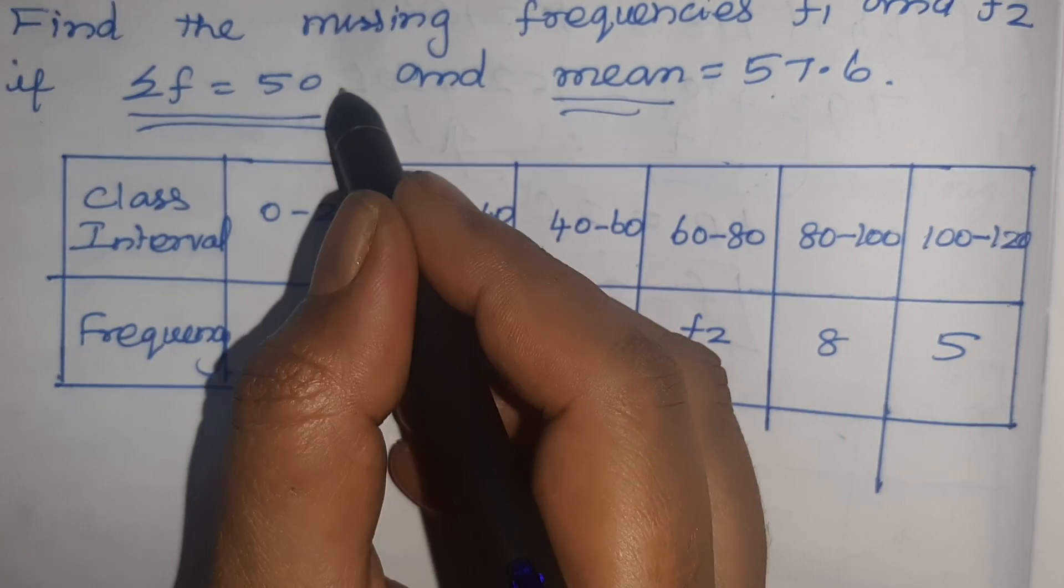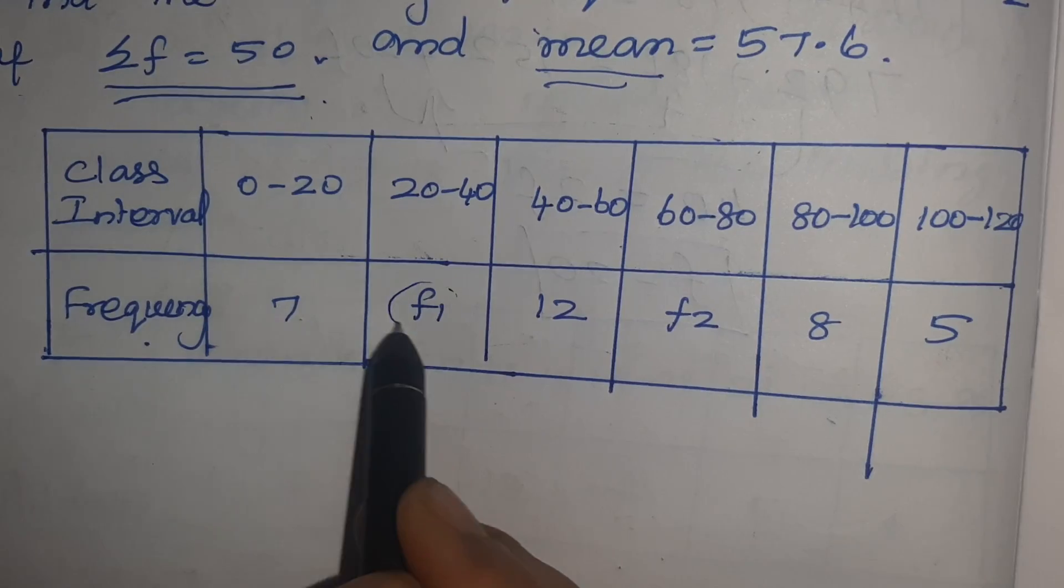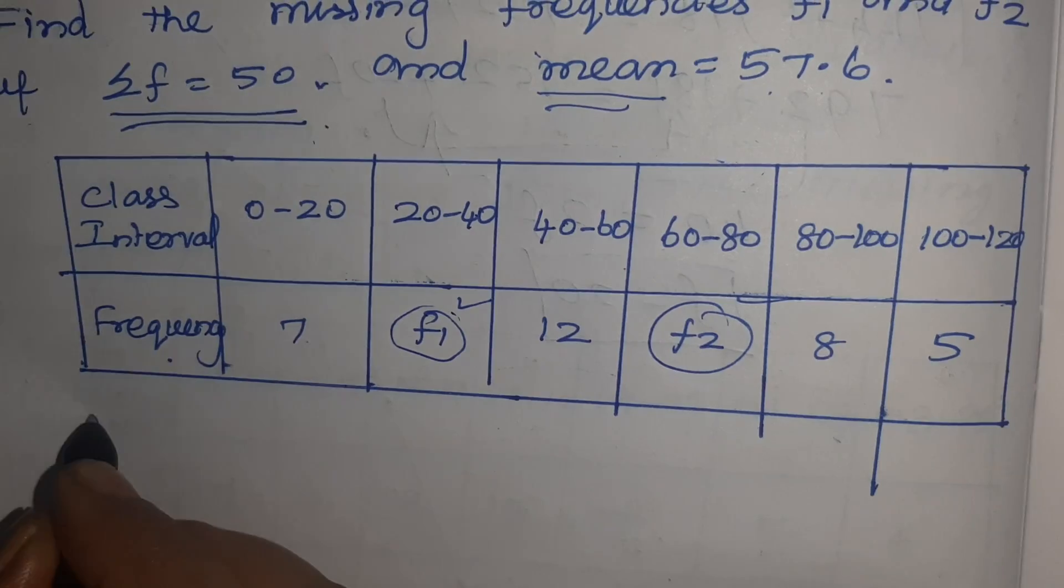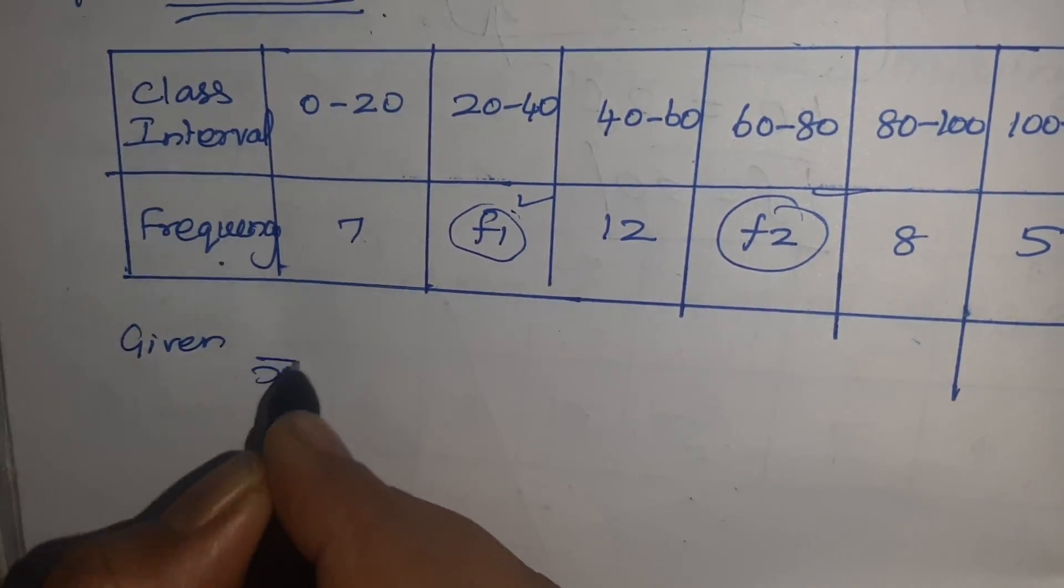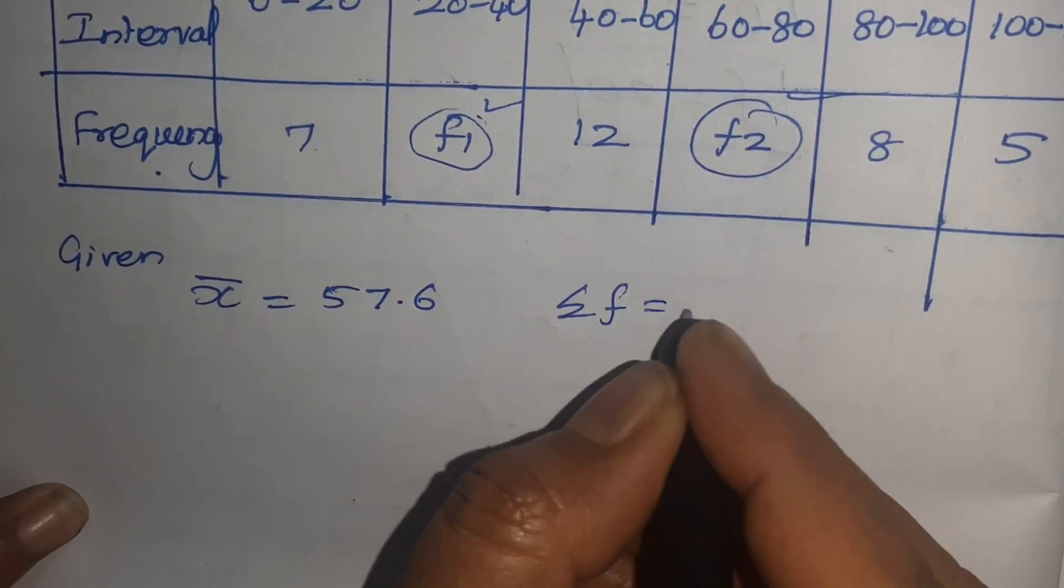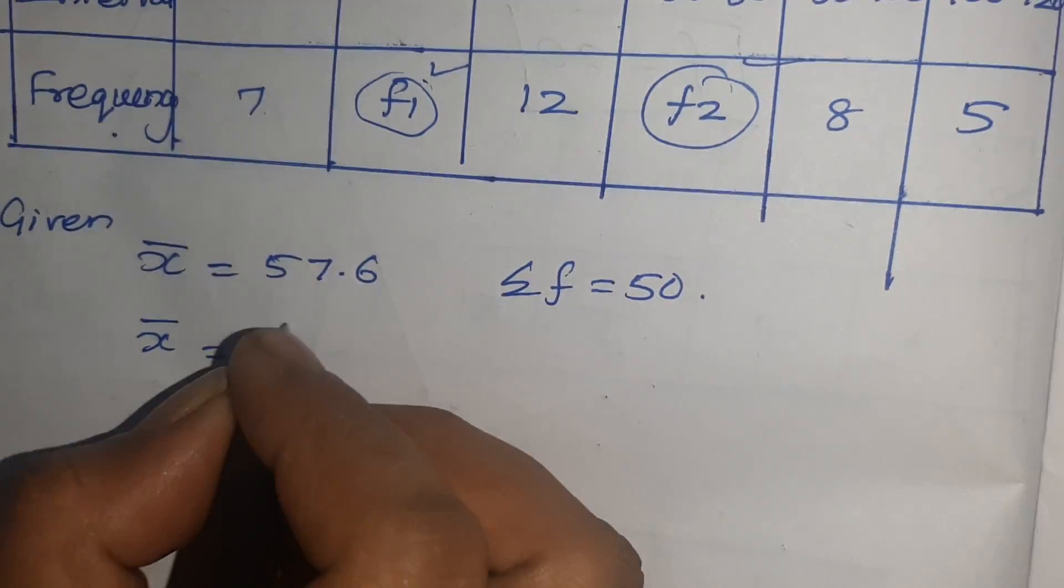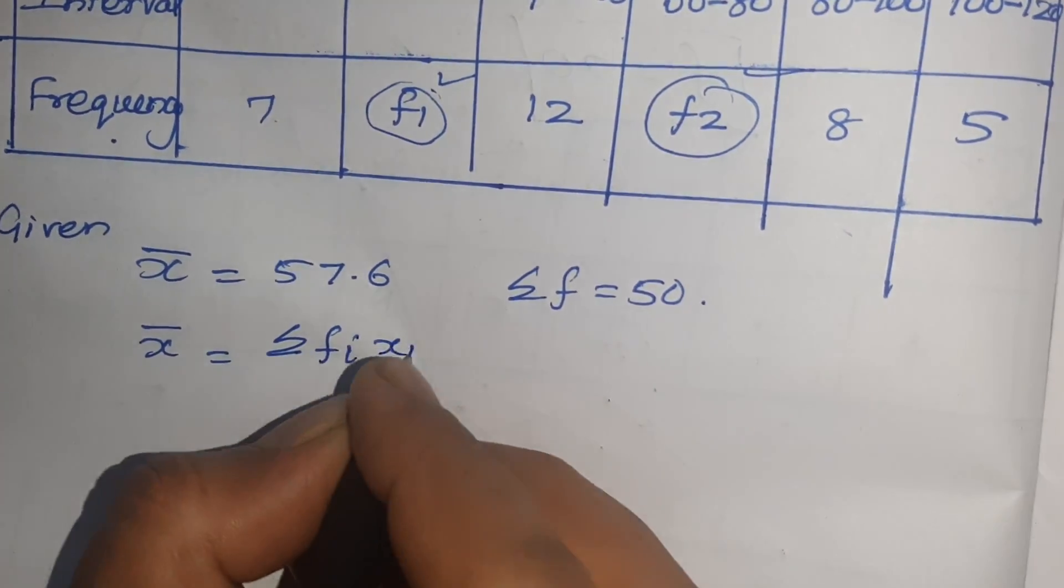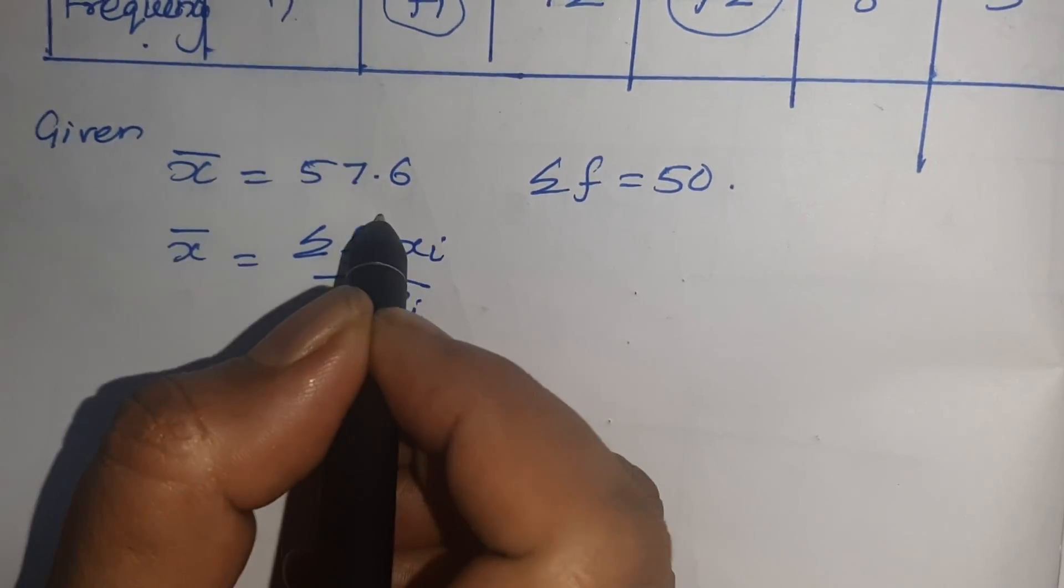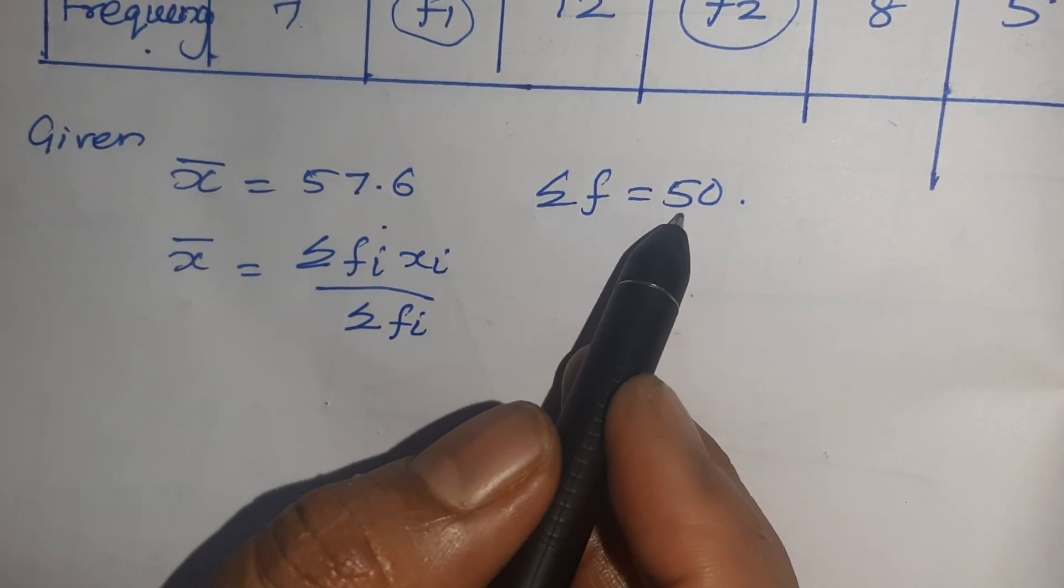Here two data are given and the table is also given. Class interval and frequency is given. We have to find two frequencies F1 and F2. Here mean is given. What is given? X bar equals 57.6 and sigma F equals 50. Here it is given as sigma F is 50.